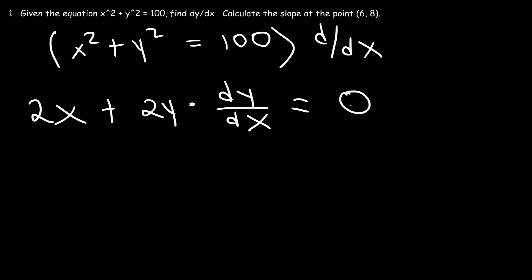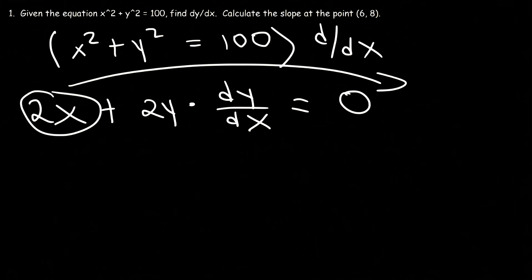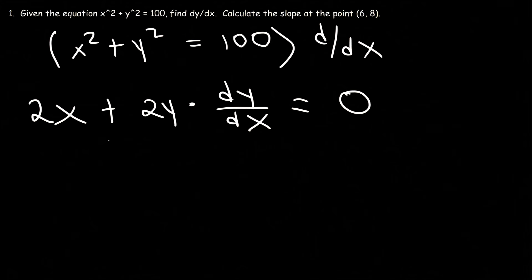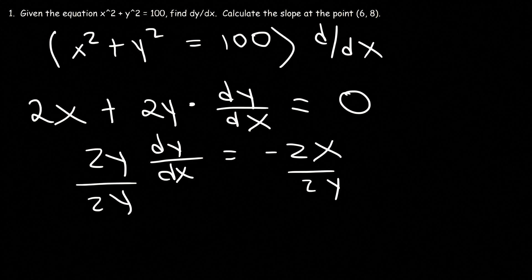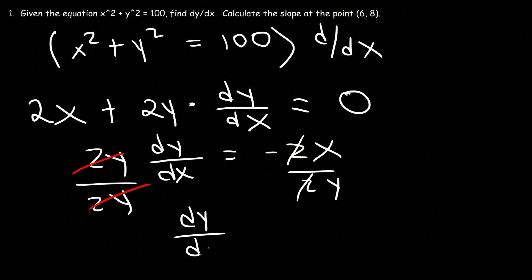Now let's isolate dy/dx. Let's take the 2x and move it to the other side. Subtracting both sides by 2x, on the left we'll have 2y dy/dx, and on the right, negative 2x. Now let's divide both sides by 2y. We can also cancel the negative 2. So dy/dx is equal to negative x over y.